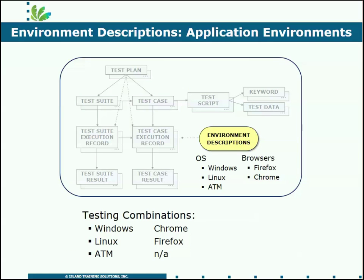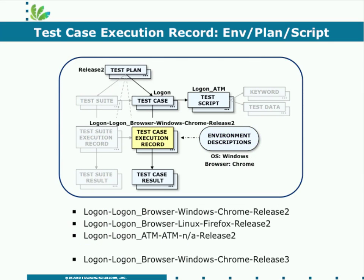If we switch down to the test execution portion of RQM, we're going to start by worrying about all of those environment descriptions. How many different environments do I need to test each of those test cases in? How many variables are there in browsers and OSes that I need to worry about for each test case? I'm going to generate from those environment descriptions a test case execution record that describes for a test case a particular testing scenario.